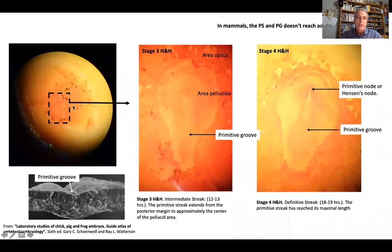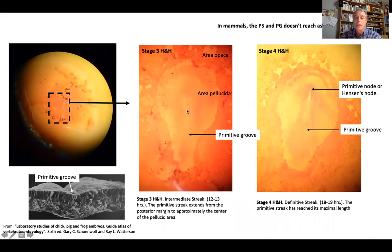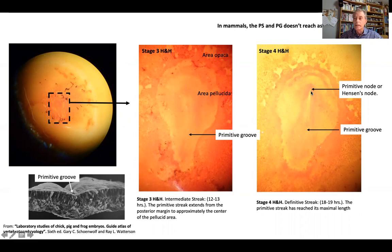On the left you have an image of a chick embryo at stage 3 Hamburger and Hamilton. Here the primitive streak has grown about two-thirds of the length of the embryonic disc. At this level, the primitive streak has become a groove called the primitive groove. At stage 4 Hamburger and Hamilton, the primitive groove has grown longer, and the rostral end of this primitive groove is called the Hensen's node or primitive node.